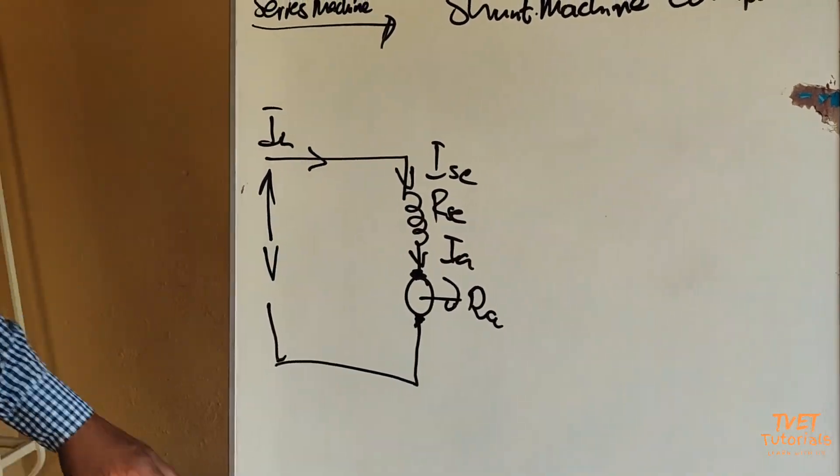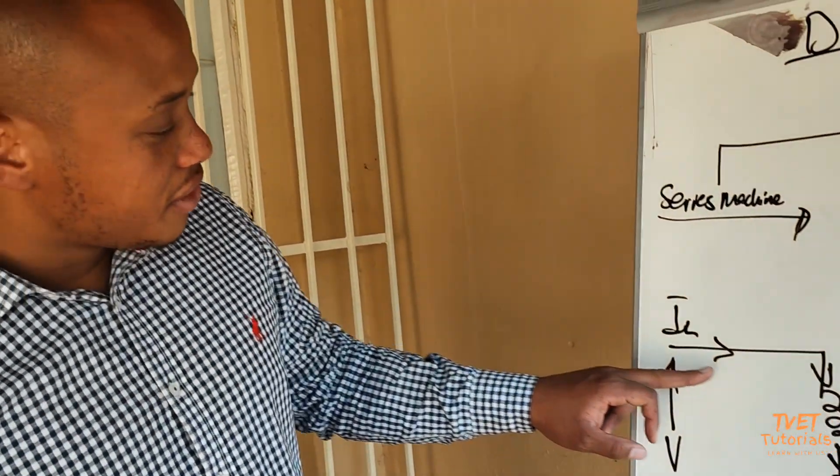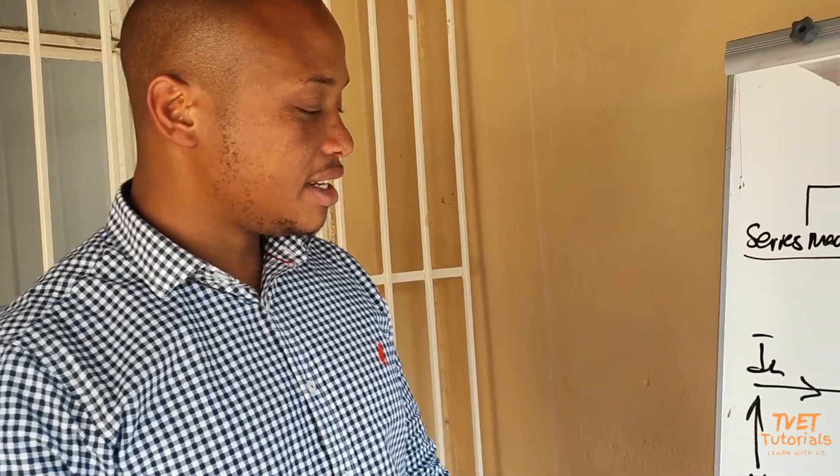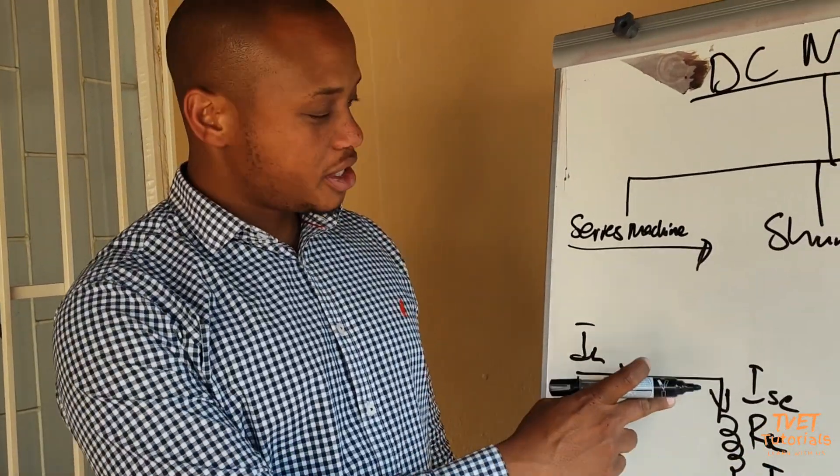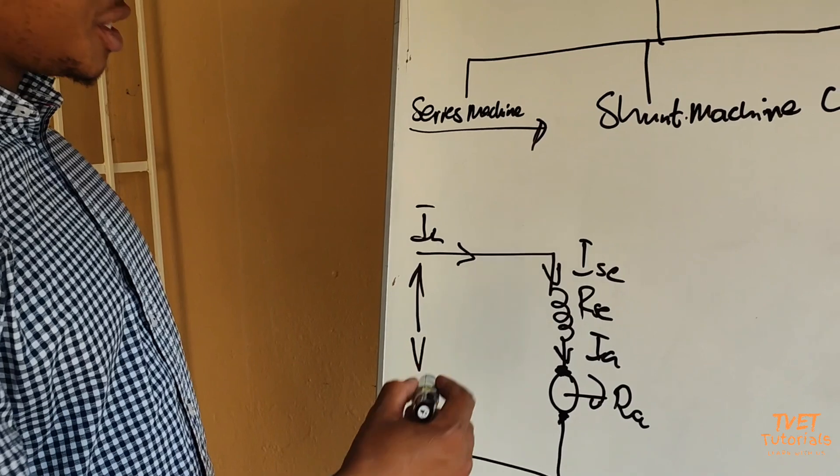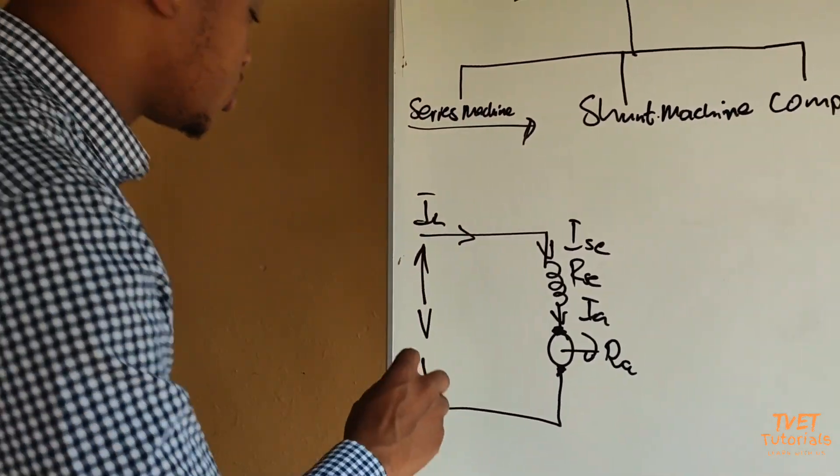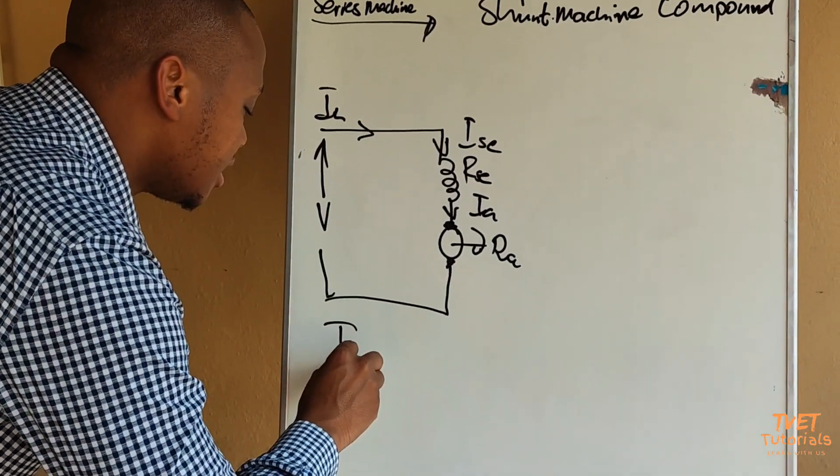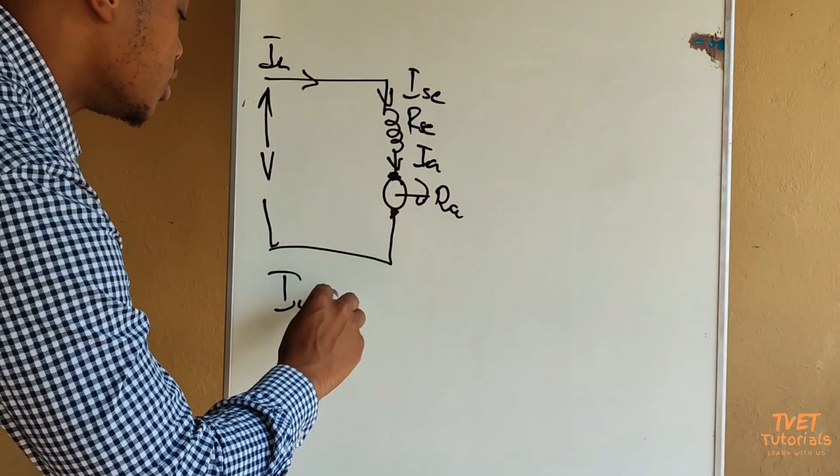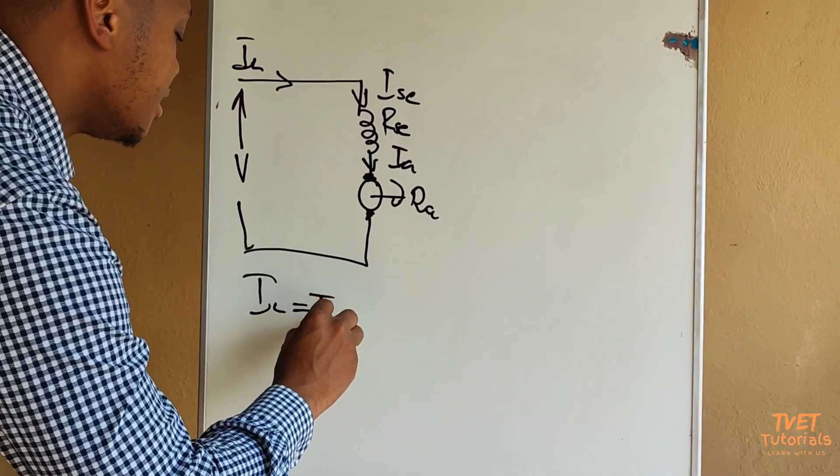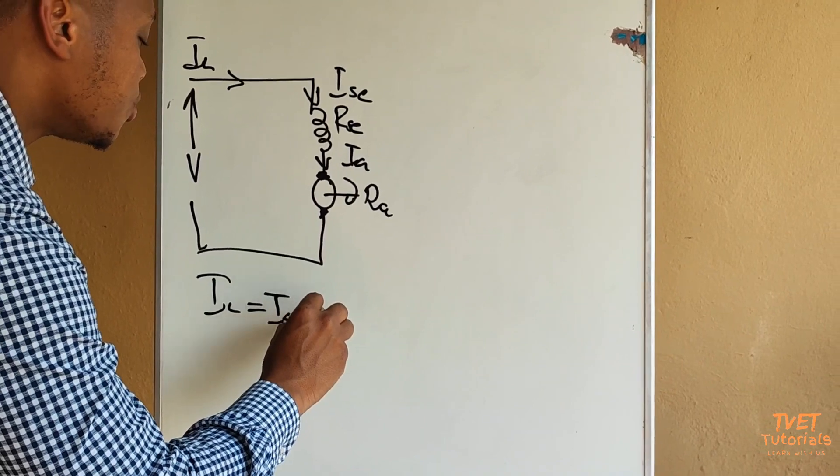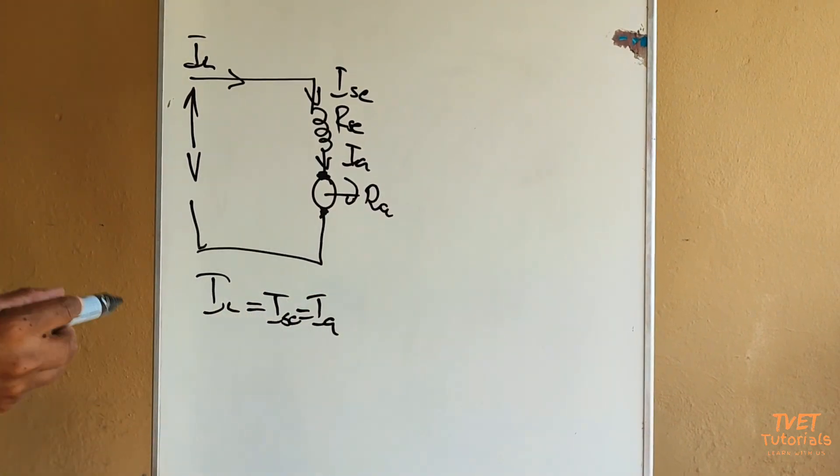We can see that since all of these components are connected in series, the currents will also be equal to each other. So the first equation is ISE which is equal to IA.